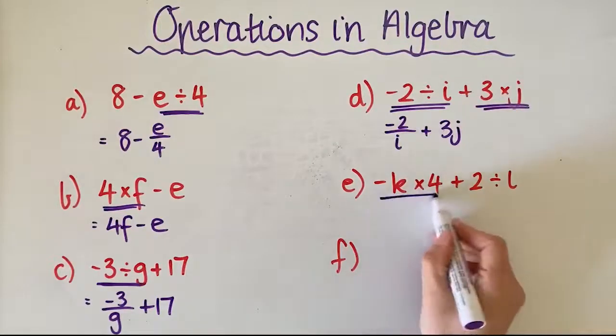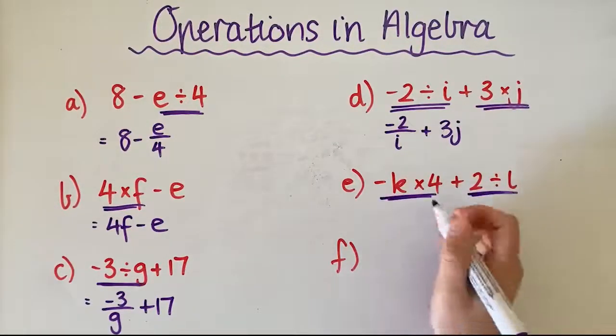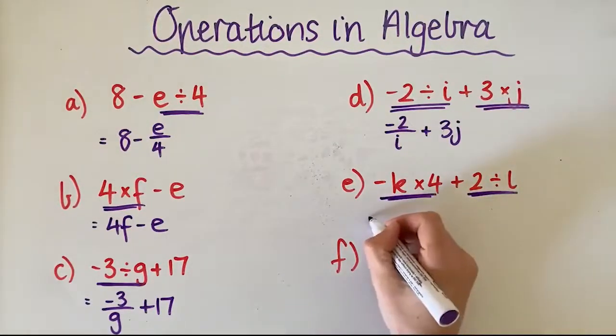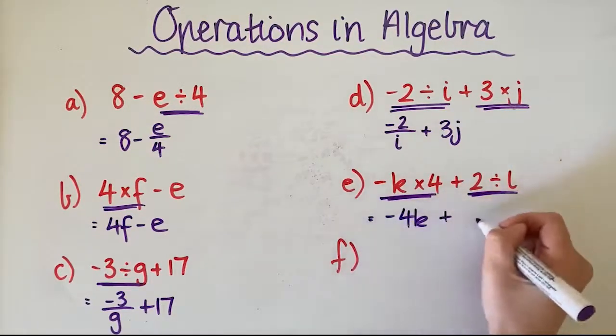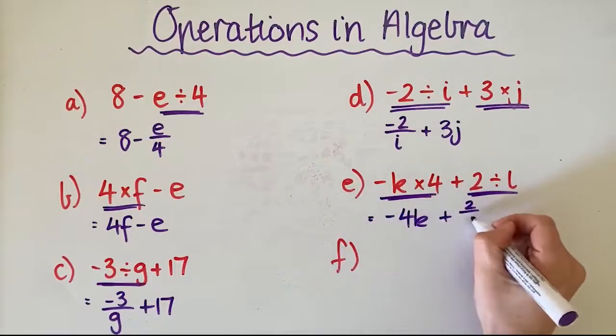This example, again, we've got a multiplication and we've got a division, except this one will become negative 4K plus 2 over L.